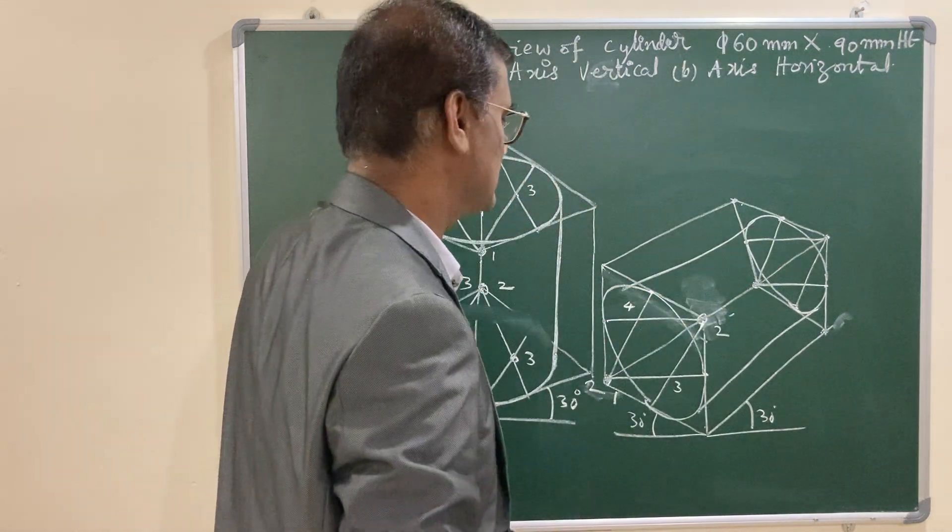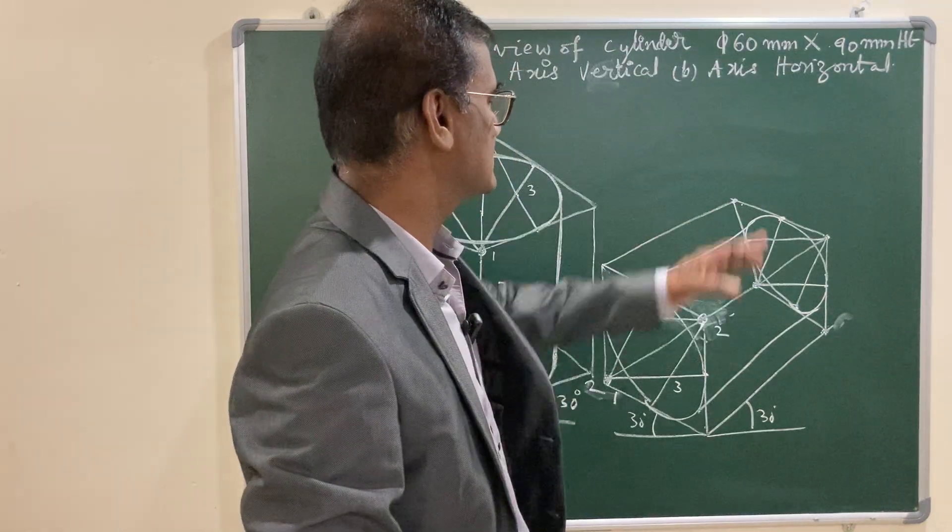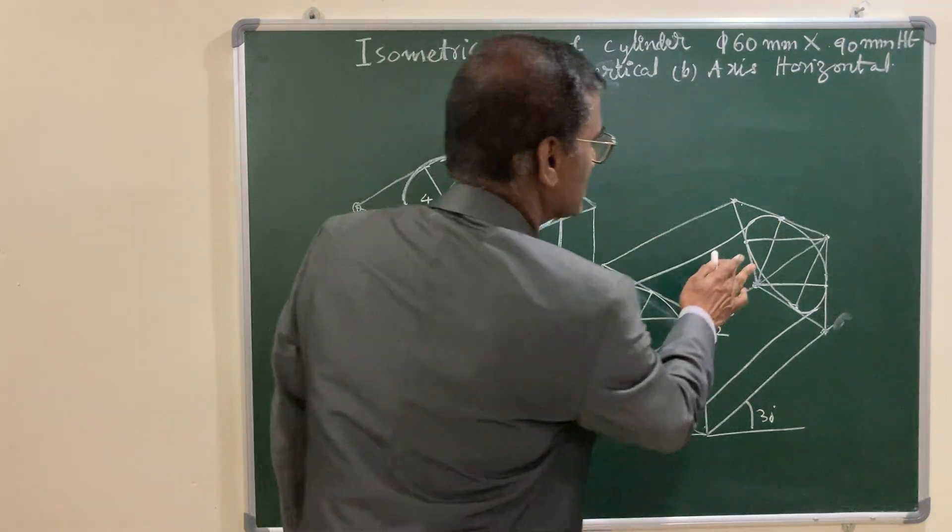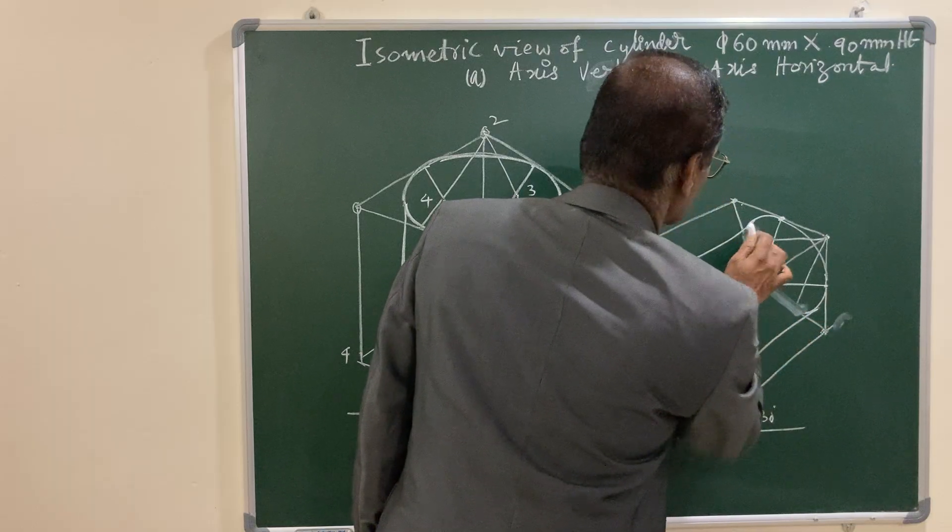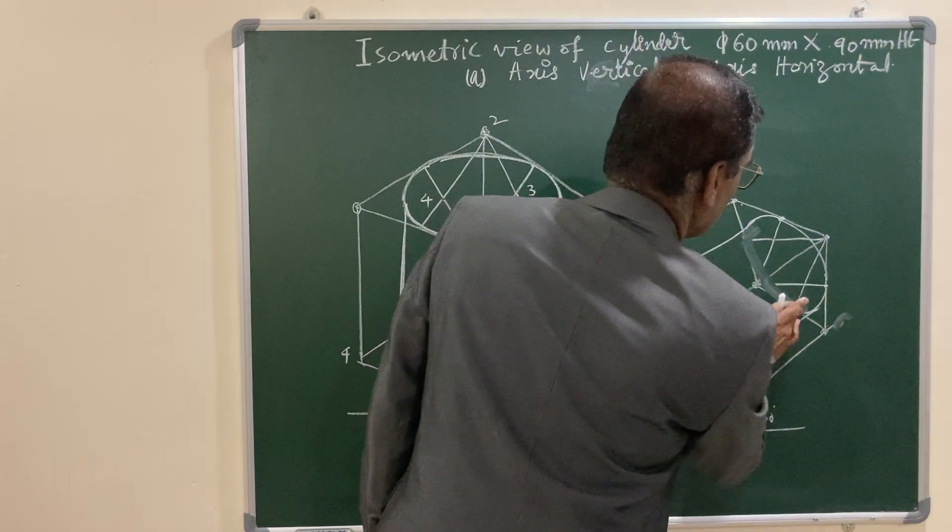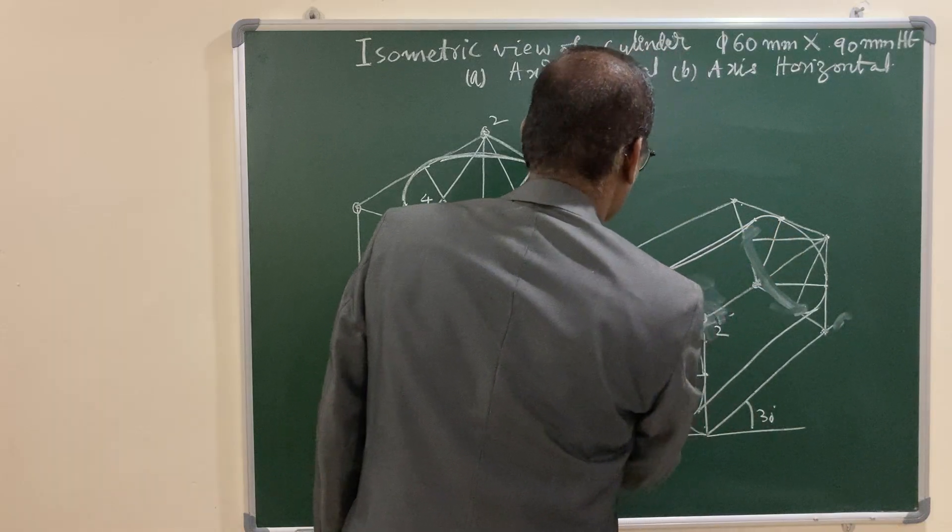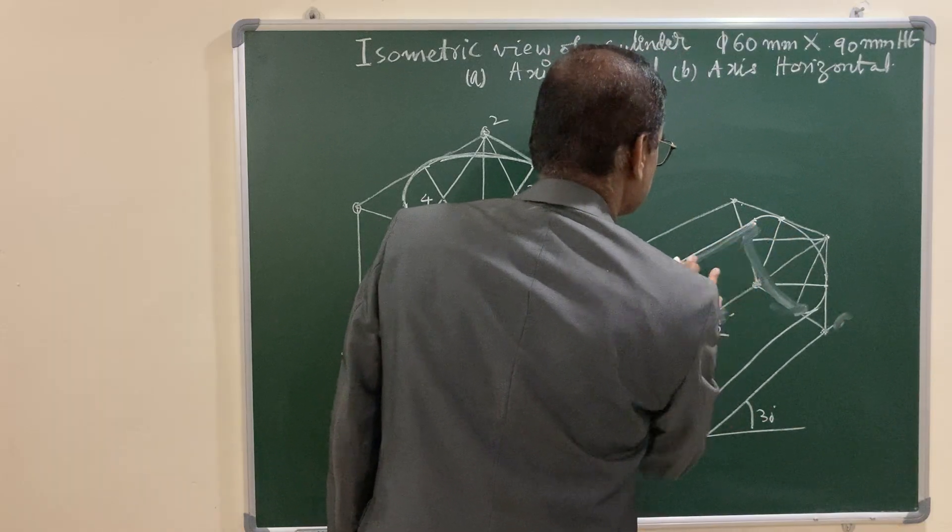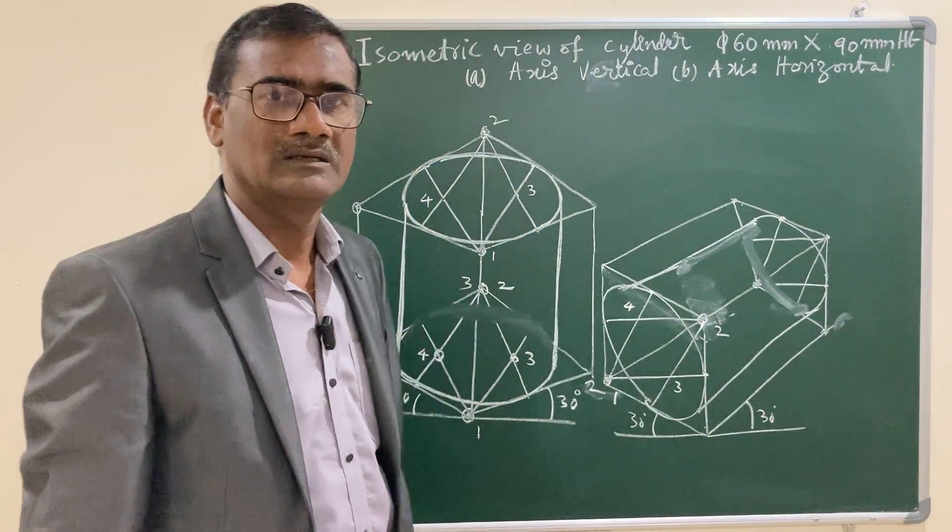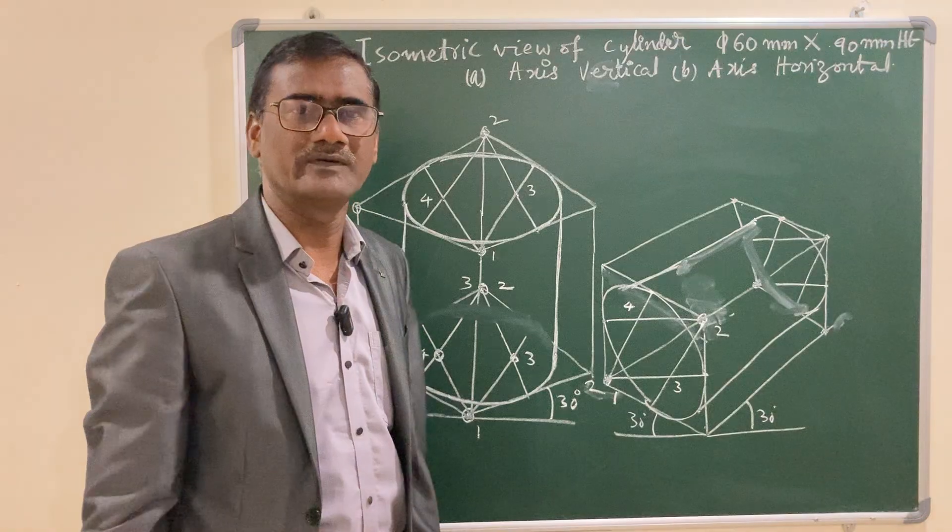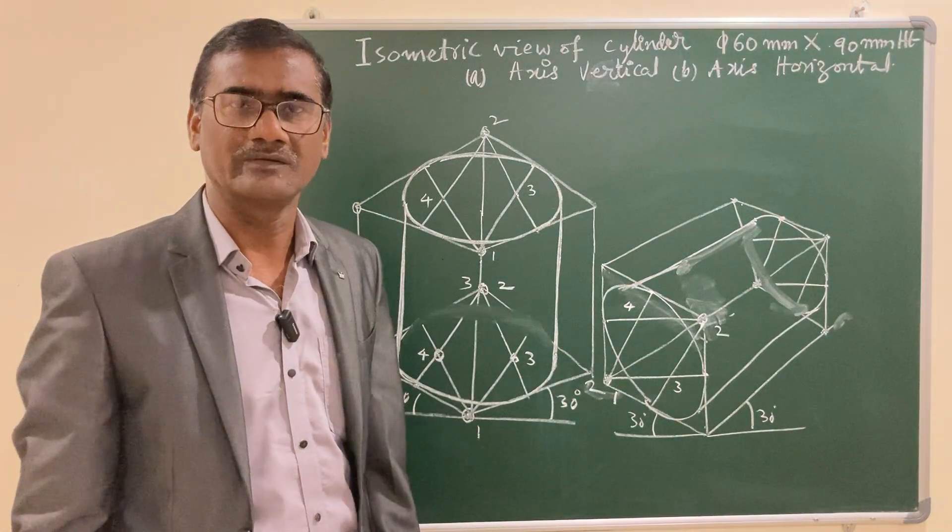This is your required cylinder keeping axis horizontal. This semicircular arc is not visible, you can just avoid this. I hope you understood how to draw the isometric view of a cylinder, keeping axis vertical and keeping axis horizontal. Thank you.